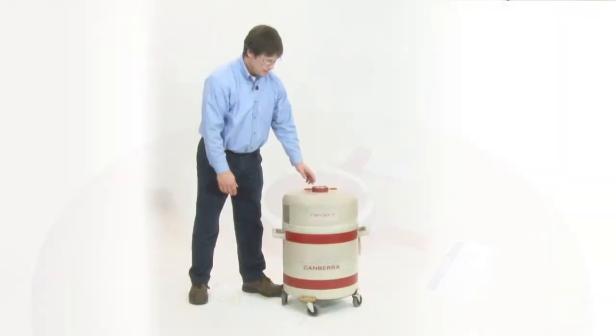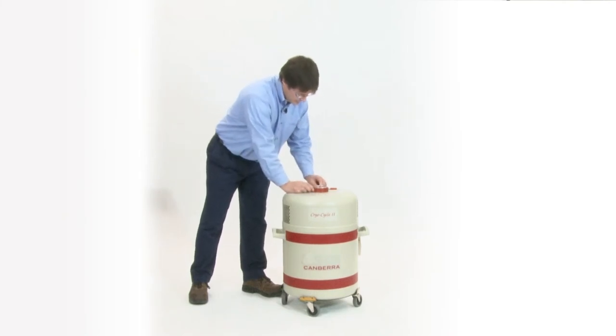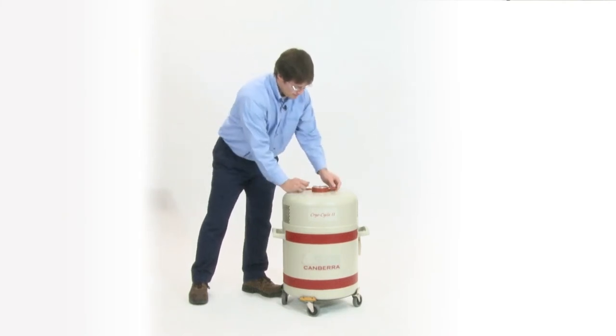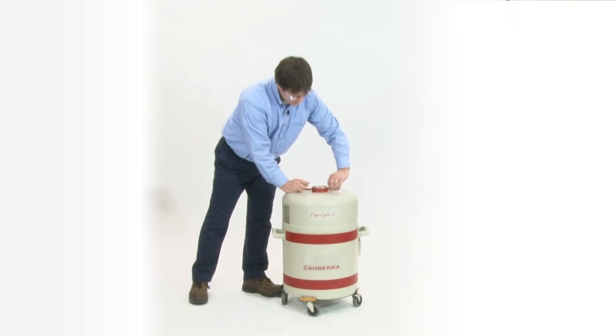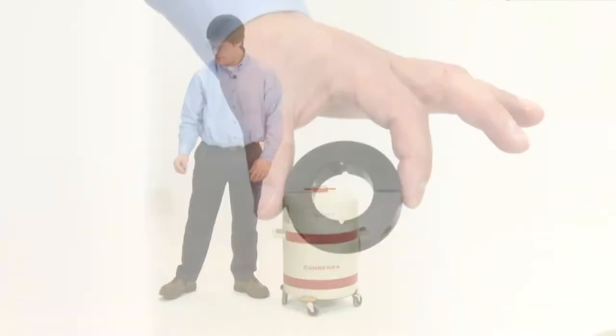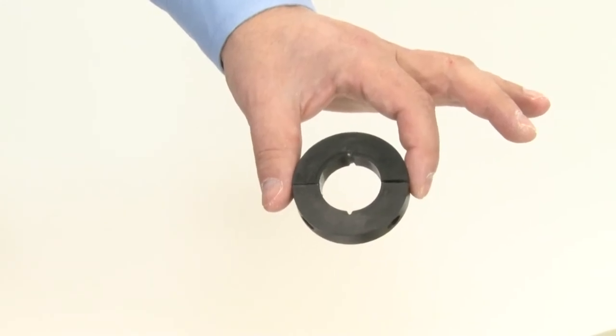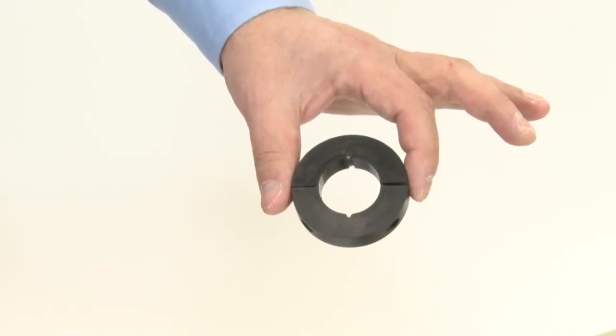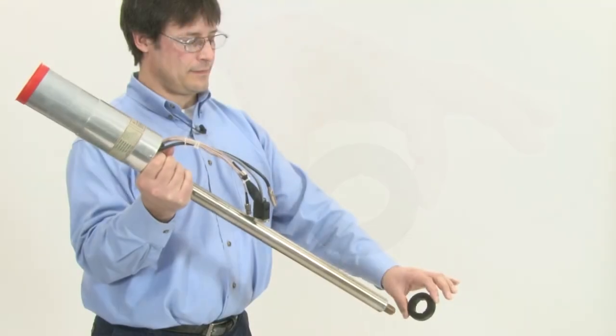The next thing we'll do is we have to remove the vent plug because when we put the dipstick into the system, the gas that's displaced needs to vent. Before we put the dipstick in, we need to put our Delrin collar on. So you can just slide that on first.